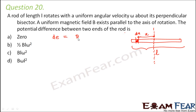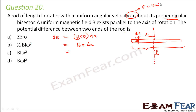The small EMF dE will be equal to B × v × dx. Here θ = 90°, so sine θ = 1, giving dE = Bv dx. Since the question is in terms of angular velocity, and linear velocity v = rω, we substitute to get dE = B·x·ω dx, where x is the distance of the small element from the center.